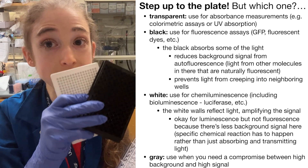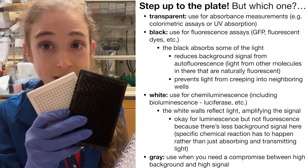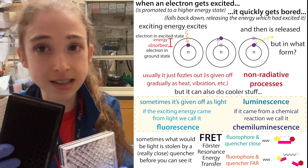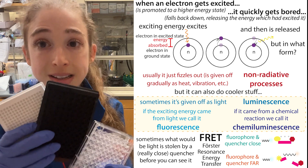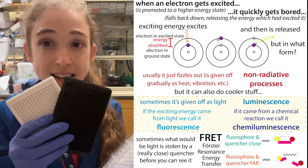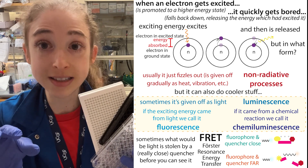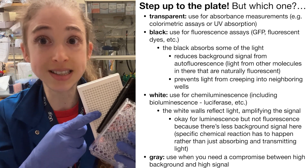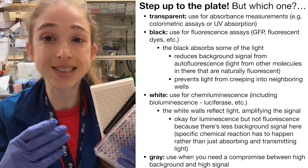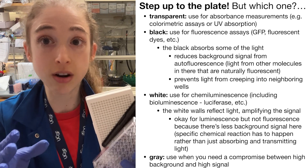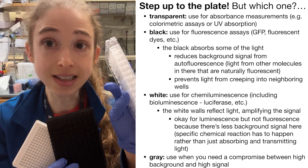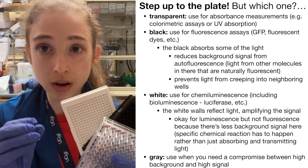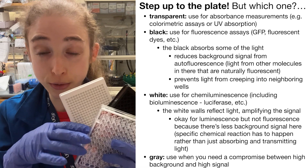In the case of luminescence and fluorescence — fluorescence being just a type of luminescence, more on that in a minute — basically in both cases the molecules are actually giving off light. So you need to make sure that the light they give off is not going to seep into neighboring wells, because that's going to cause crosstalk. So instead of having clear walls, you want opaque walls, which the light can't get through.